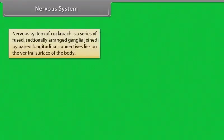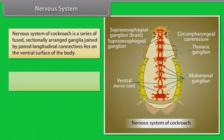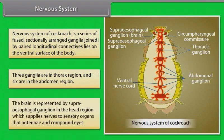The nervous system of the cockroach is a series of fused segmentally arranged ganglia joined by paired longitudinal connectives, lying on the ventral surface of the body. Three ganglia are in the thorax region and six are in the abdomen region. The brain is represented by the supra-oesophageal ganglion in the head region, which supplies nerves to sensory organs — the antennae and compound eyes.